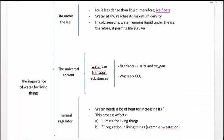And finally, as we said before, water is the most important thermal regulator. Water needs a lot of heat for increasing its temperature. This process can affect the climate for living things. In this case, os pongo el ejemplo de una isla. Todos los seres vivos que viven en una isla disfrutarían de un clima mucho más suave. Sin embargo, dentro de un continente alejado de las grandes masas de agua, las temperaturas sí que podrían ser o más frías o más cálidas.